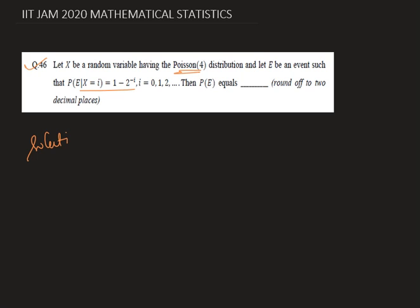So let's start this solution. X is Poisson(4), therefore the PMF of X is e to the power minus 4, times 4 to the power x divided by x factorial, where x is 0, 1, 2, and so on.